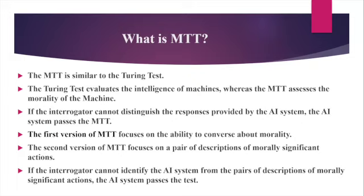In the past versions of the MTT or Moral Turing Test, Allen and others basically give importance to the ability to converse about morality. According to them, if the interrogator cannot distinguish the responses provided by the AI system, then the AI system will pass the test. But as already mentioned, morality is not about merely conversing about morality — it is more about the performance of morally relevant actions. In order to overcome this issue, they introduced updated versions of the Moral Turing Test.